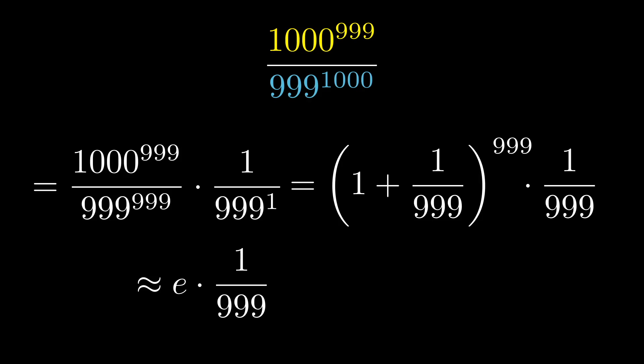And the number E itself is approximately 2.7. And we have this fraction. Approximately 2.71 over 999 is definitely a fraction less than 1, meaning our original quantity was less than 1. The denominator has to be larger than the numerator.